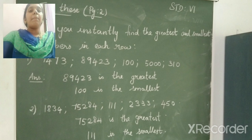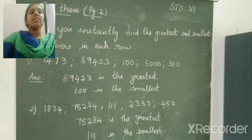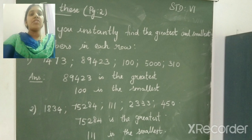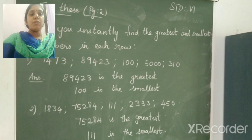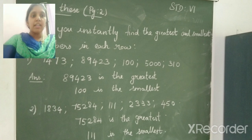So the number having more digits, that is 89,423 is the greatest number. And the number having less number of digit is 100 and 310. So on the left most position for 100, it is 1 and 310, it is 3. So 100 is the smallest number.